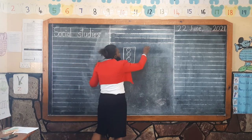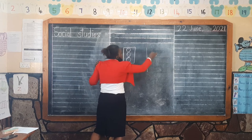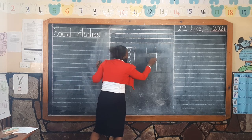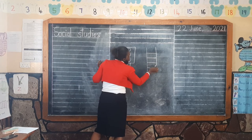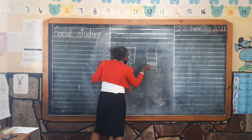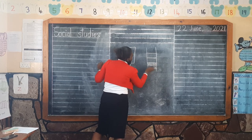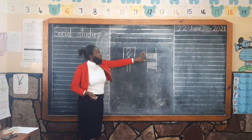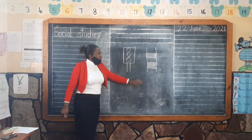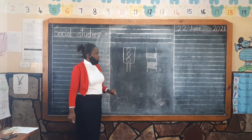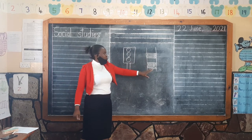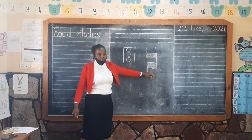We also have this other road safety sign that you looked at. This is a zebra crossing. You find it on the road. Usually when you are crossing the road, we use this sign to cross the road. It guides us.